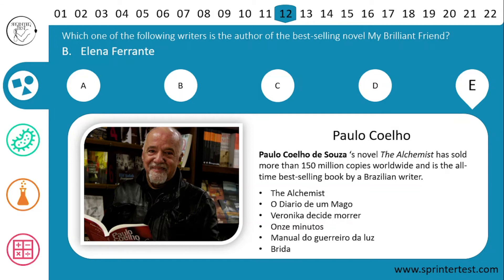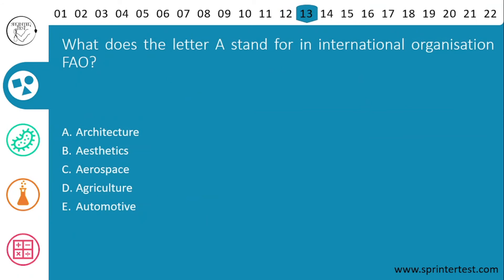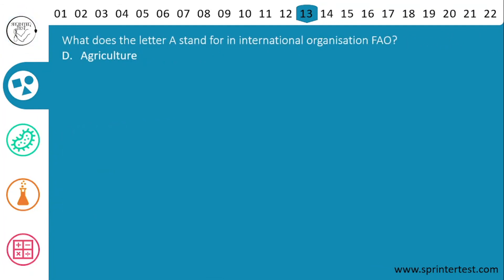Moving to question 13: what does the letter A stand for in the organization FAO? The options are: A) architecture, B) aesthetics, C) aerospace, D) agriculture, E) automotive. The correct answer is D, agriculture — because FAO stands for Food and Agriculture Organization.